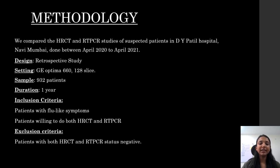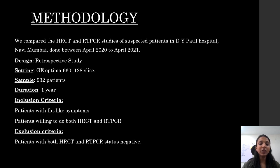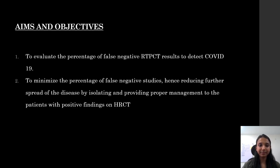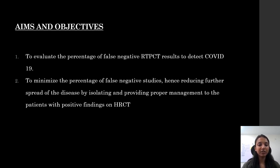We compared HRCT and RT-PCR studies of suspected patients at DY Patil Hospital, Navi Mumbai between April 2020 to April 2021. It is a retrospective study done on a GE Optima 660 128-slice machine. The sample size is 932 patients. Inclusion criteria are patients with flu-like symptoms willing to undergo both HRCT and RT-PCR study. Exclusion criteria are patients with both HRCT and RT-PCR status negative. The aims and objectives are to evaluate patients with false negative RT-PCR results and to minimize the percentage of false negative studies, hence reducing further spread of the disease by isolating and providing proper management to patients with positive HRCT findings.